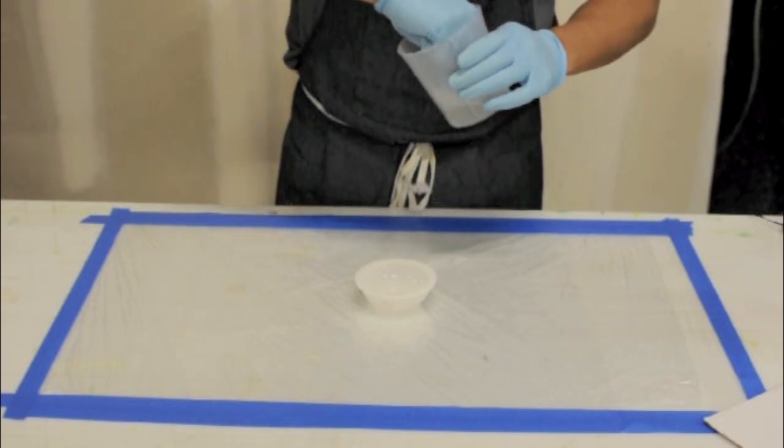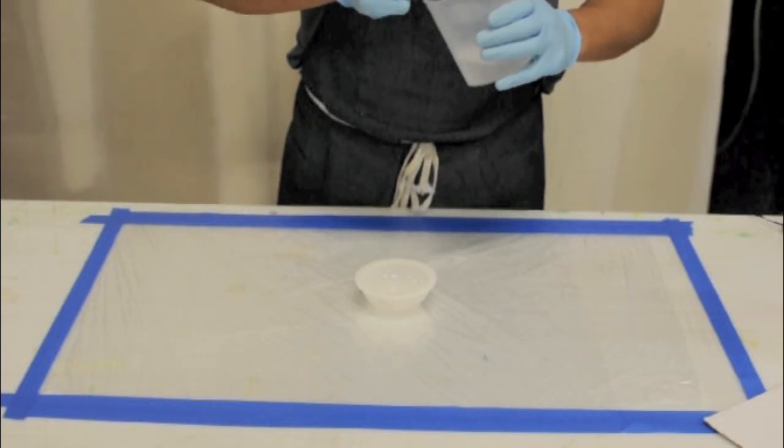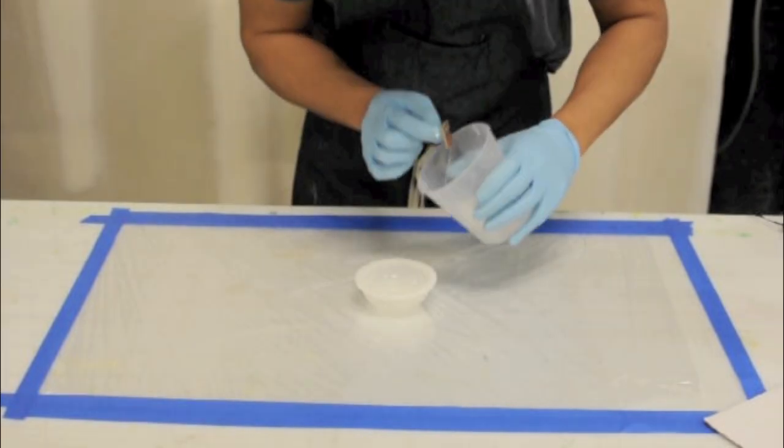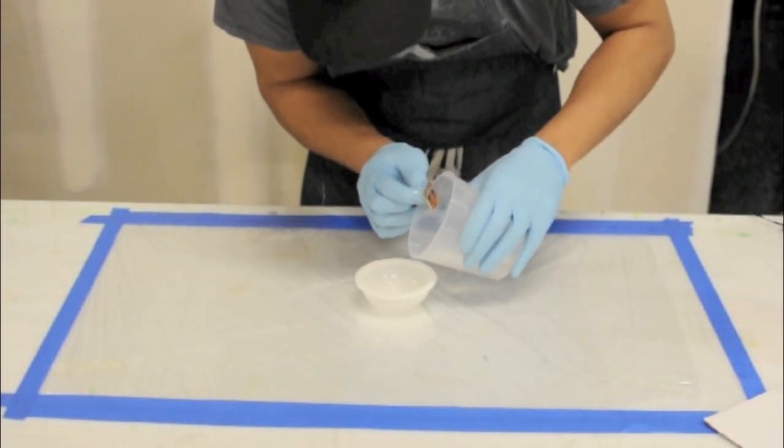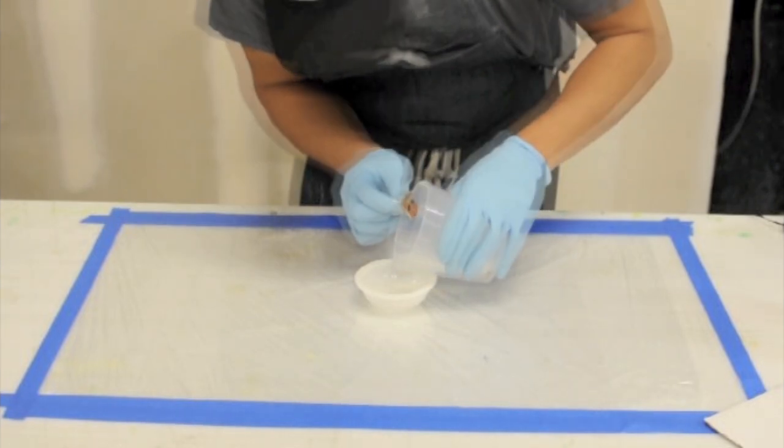First, thoroughly wet the object you wish to embed with epoxy. Next, deposit a thin layer of epoxy over the previous layer.